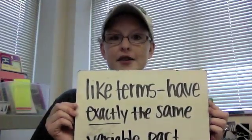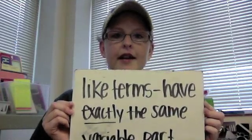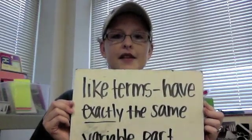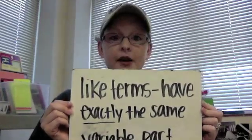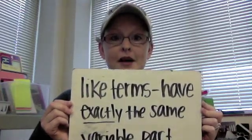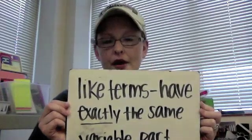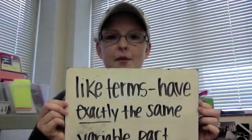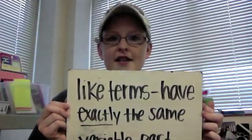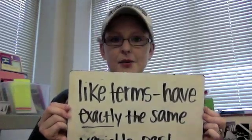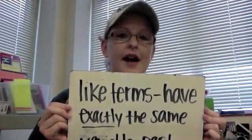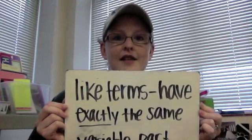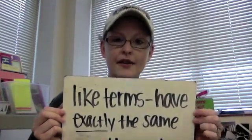When I think about like terms, I think about M&Ms. We got a lot of M's going on, but to be like terms, they would have to be the same kind of M&Ms. Plain M&Ms only go with plain M&Ms. Peanut M&Ms only go with peanut M&Ms. Almond M&Ms only go with almond M&Ms. Now, are they all M's? Yeah. In the same way, when I put like terms together, x can only go with x. X squared only goes with x squared. X to the third only goes with x to the third. They're all x's, but they have to be exactly the same variable part to be considered a like term.